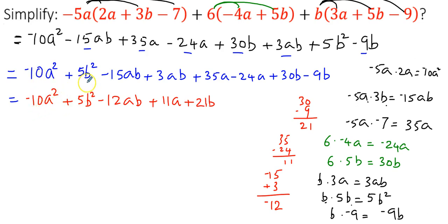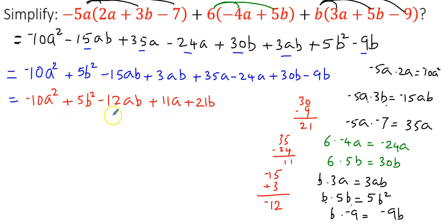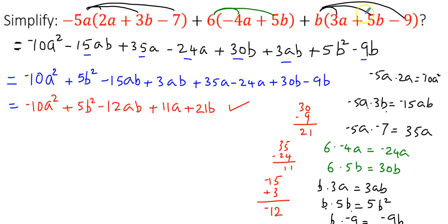So the final answer is: negative 10a squared plus 5b squared minus 12ab plus 11a plus 21b. You cannot simplify further because a squared, b squared, ab, a, and b are all unlike terms. This is the simplified form of the given expression — it's a lengthy expression, but very simple if you know the process using the distributive property.